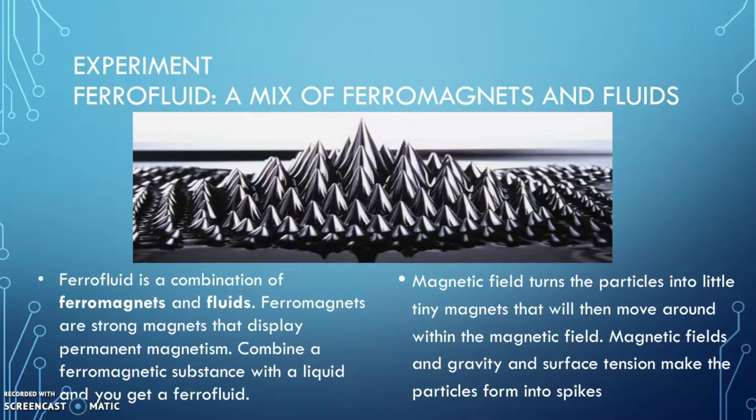So this ferrofluid can actually make spikes, like it's shown in this picture. And these little magnetic fields turn these particles into tiny magnets and they can actually move around, like you'll see later in my experiment. But, the magnetic field and the gravity and the surface tension, all that, allow these particles to make spikes. So, it's really cool, really fun to play with this. So, let's get on to the experiment.